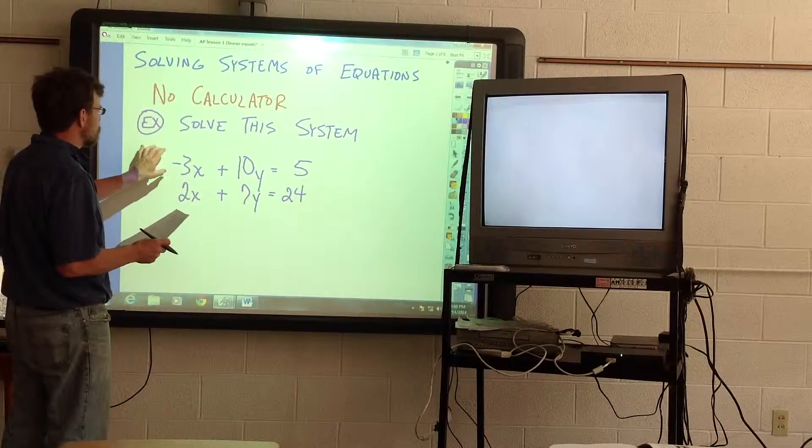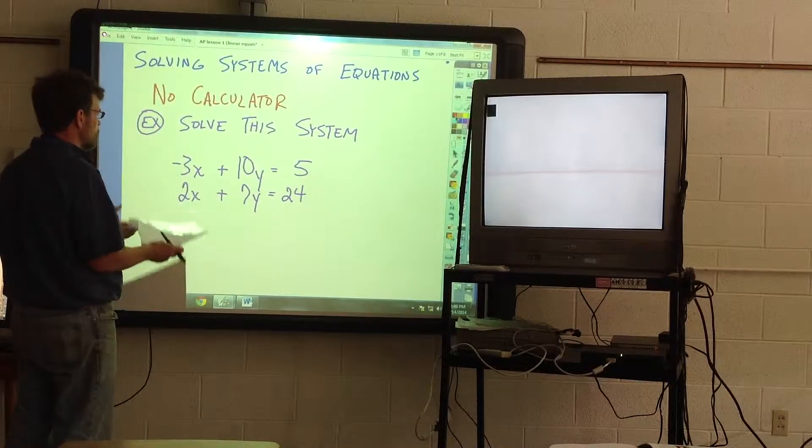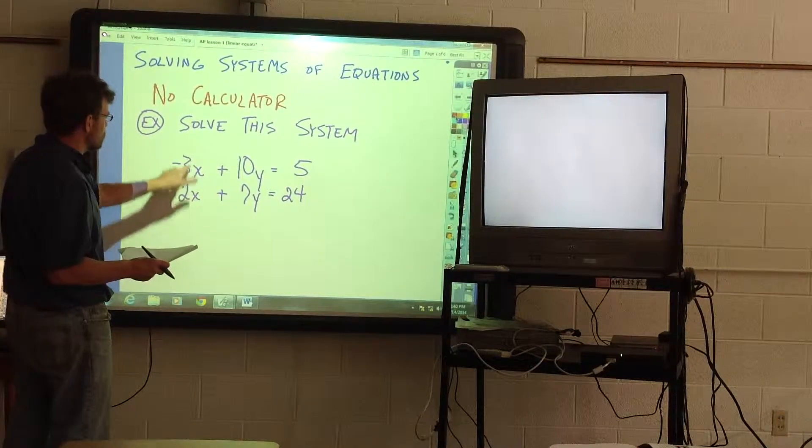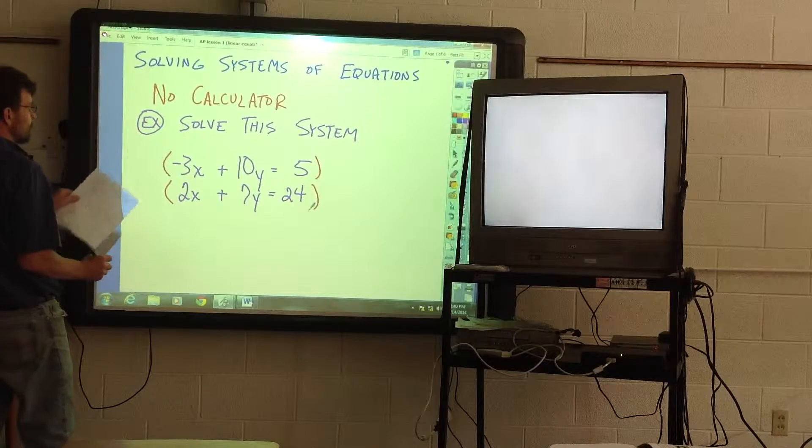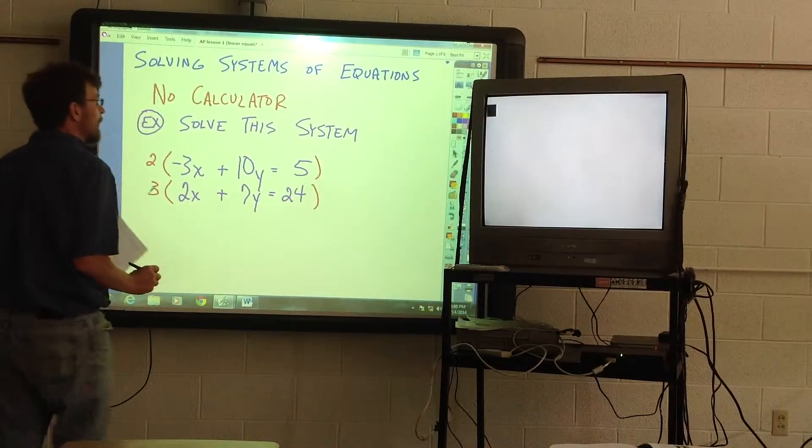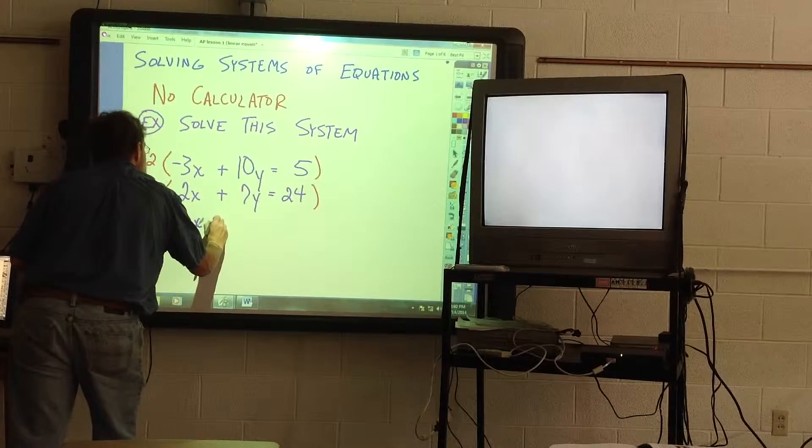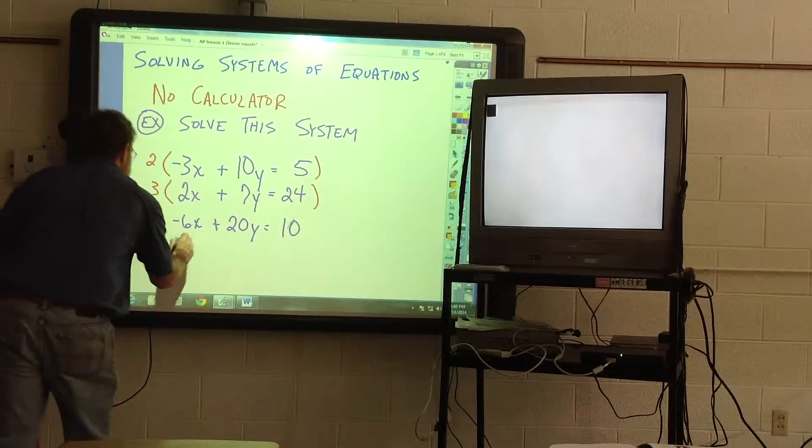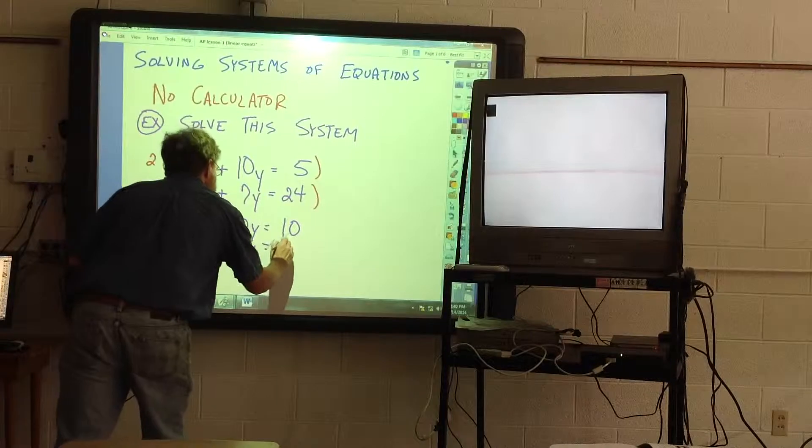And so what we need to do is multiply the top equation by some number and then the bottom equation by another number, so we get opposite values for coefficients of X here. So in this one, if I want to eliminate X, I am going to multiply the top by two and the bottom by three. As a result, if I multiply the top by two, I will get negative 6X plus 20Y equals 10, and the bottom will change to 6X plus 21Y equals 72.